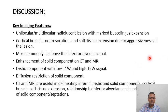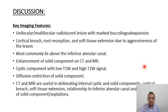Regarding the discussion, the key imaging features of ameloblastoma are unilocular or multilocular radiolucent lesion with marked buccolingual expansion. There will be cortical bridging, root resorption, and soft tissue extension due to aggressiveness of the lesion. Most commonly the lesion lies above the inferior alveolar canal. Enhancement of the solid component is seen on CT and MRI. The cystic component shows low T1 and high T2 weighted signal with diffusion restriction of the solid component. CT and MRI are useful in delineating internal cystic and solid components, cortical bridging, soft tissue extension, relationship to the inferior alveolar canal, and enhancement of solid component and septation.